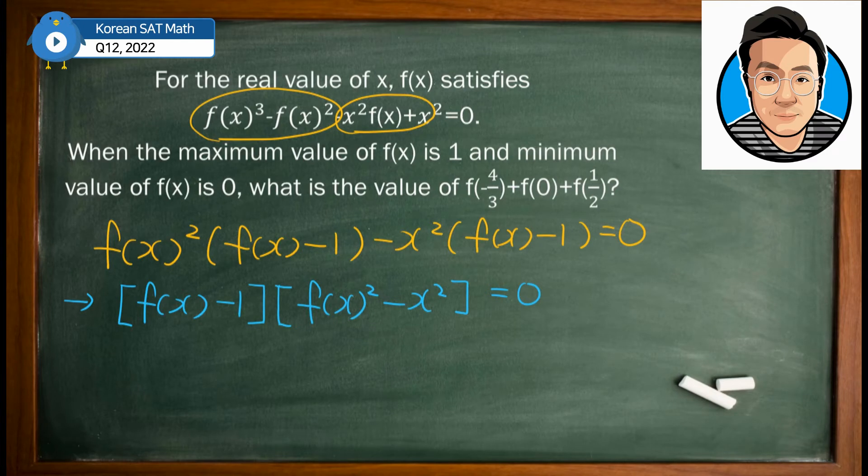But then again, the second bracket, we can actually rewrite this as f(x) + x multiplied by f(x) - x.